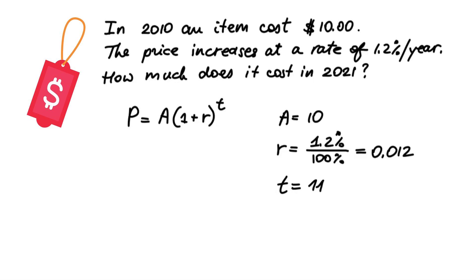Now let's substitute those values into the formula and calculate how much the item costs today. P = 10(1 + 0.012)^11. First, add what's inside the bracket. P = 10(1.012)^11.